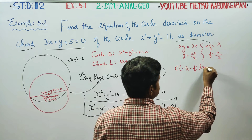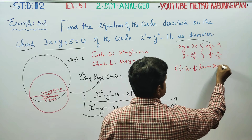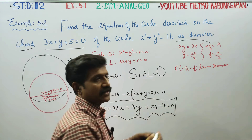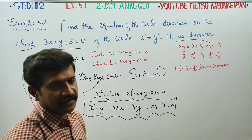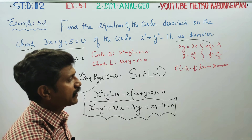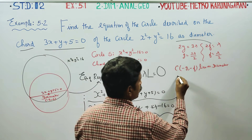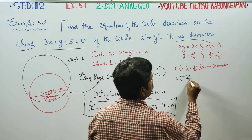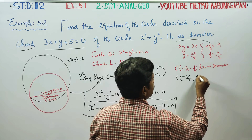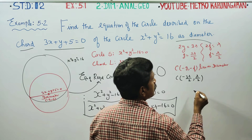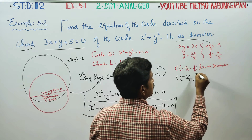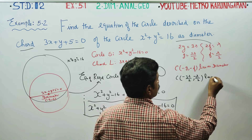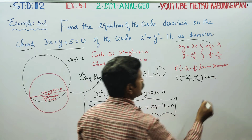Now we need to find lambda. The center of the required circle lies on the diameter. The center coordinates are (-3λ/2, -λ/2), and this center lies on the chord line 3x + y + 5 = 0.